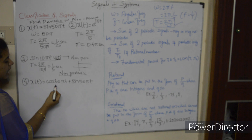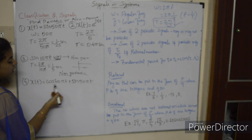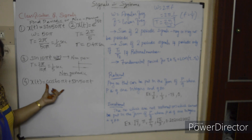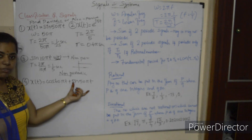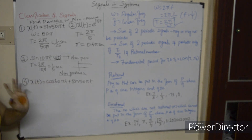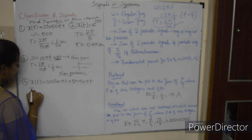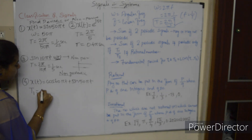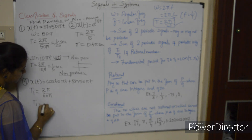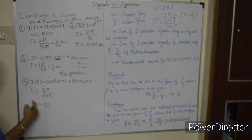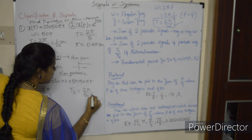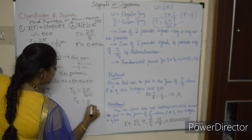Problem 4: x(t) = cos(60πt) + sin(50πt). There are two signals, so find T1 and T2 individually. T1 = 2π/(60π) = 1/30. T2 = 2π/(50π) = 1/25. Now find T1/T2 = (1/30)/(1/25) = 25/30 = 5/6.